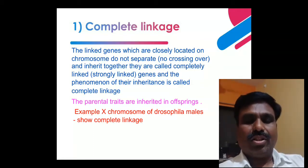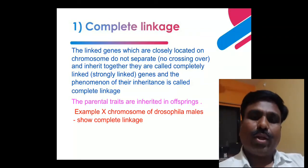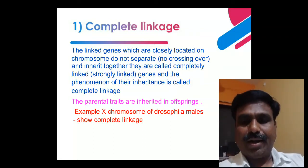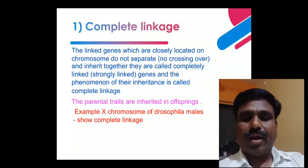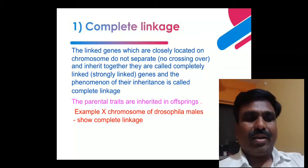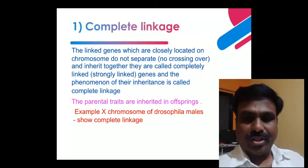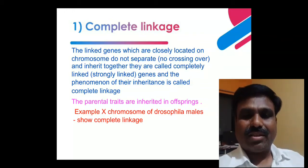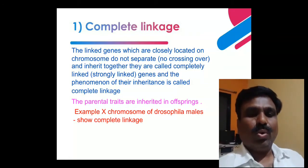In complete linkage, the linked genes which are closely located on the same chromosomes do not separate, do not get isolated, do not get segregated, and no crossing over occurs — they inherit together. This is complete linkage. The parental traits are inherited in the offspring; there is no recombination and no new character is expressed in the offspring. The best example is Drosophila melanogaster.